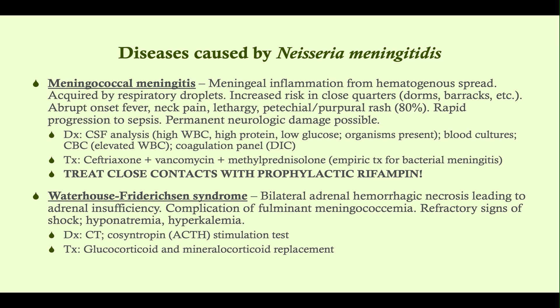You also want to get blood cultures, since N. meningitidis spreads through the blood — if they've got it in the blood, they're at risk for sepsis and probably already have it. CBC is useful, and a coagulation panel is also useful, since they're septic and can get DIC.